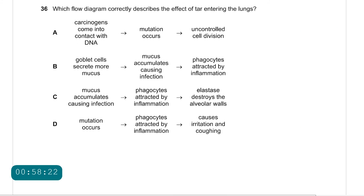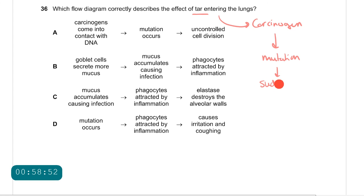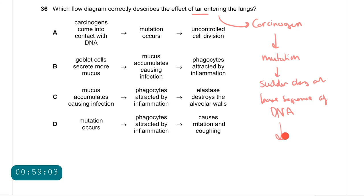Question 36: which flow diagram correctly describes the effect of tar entering the lungs? Tar is a carcinogen. Carcinogens cause mutations — a sudden change in the base sequence of DNA — and cancerous cells form. For question 36 the only description that suits this is A: carcinogens come into contact with DNA, mutation occurs, then uncontrolled cell division occurs.